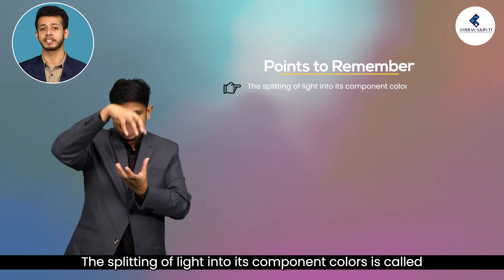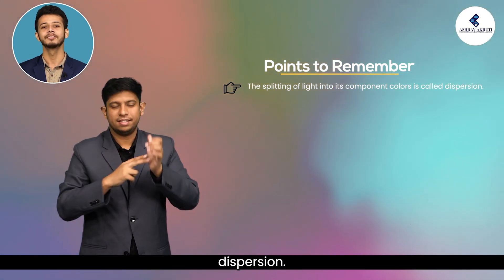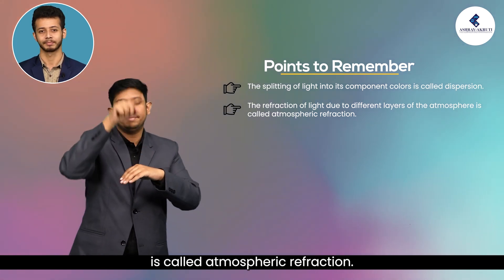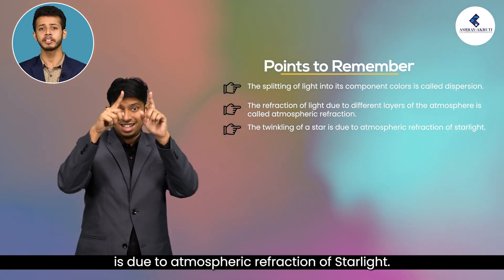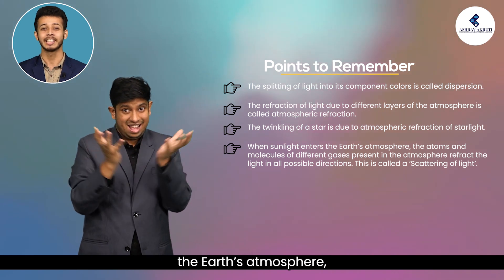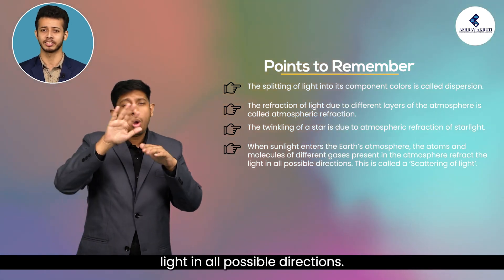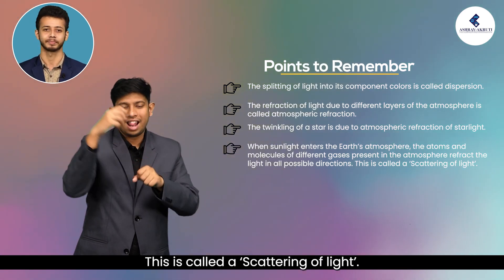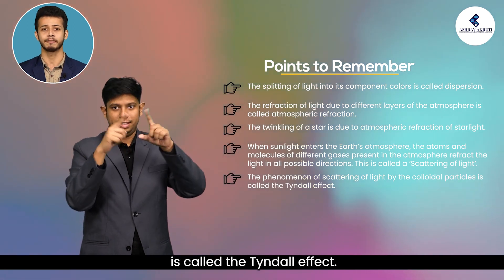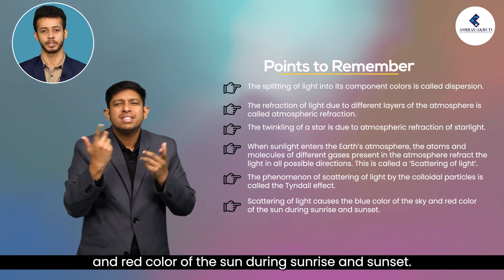Points to remember: The splitting of light into its component colours is called dispersion. The refraction of light due to different layers of the atmosphere is called atmospheric refraction. The twinkling of a star is due to atmospheric refraction of starlight. When sunlight enters the earth's atmosphere, atoms and molecules scatter light in all possible directions — this is called scattering of light. The scattering of light by colloidal particles is called the Tyndall effect. Scattering of light causes the blue colour of the sky and the red colour of the sun during sunrise and sunset.